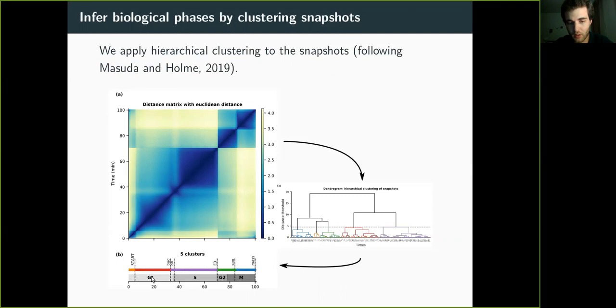And then we get clusters that are shown here in colors that correspond to timings. You can already see that, for example, here we find five clusters. We can detect very well, for example, with this red cluster the G1 phase, with this purple cluster the S phase, etc. And so already, that's quite nice.